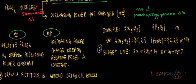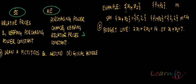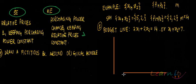Let's do a graphical example. Say you have x1 and x2 as the amounts of goods, p1 and p2 as prices, and income M. The budget constraint is 2x1 plus 2x2 equals 14, or x1 plus x2 equals 7. Let me show this on a graph.